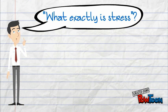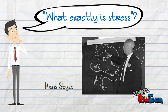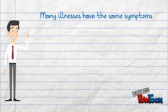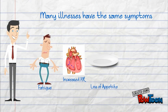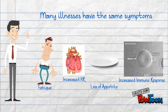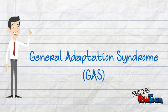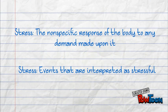What exactly is stress? A researcher named Hans Selye pondered that very same question in the 1950s. Hans noticed that many illnesses have the same symptoms, including increased heart rate, loss of appetite, fatigue, and an increased immune response. What Hans inferred is the General Adaptation Syndrome, or GAS for short. He defines stress as the non-specific response of the body to any demand made upon it, and also as events that are interpreted as being stressful.